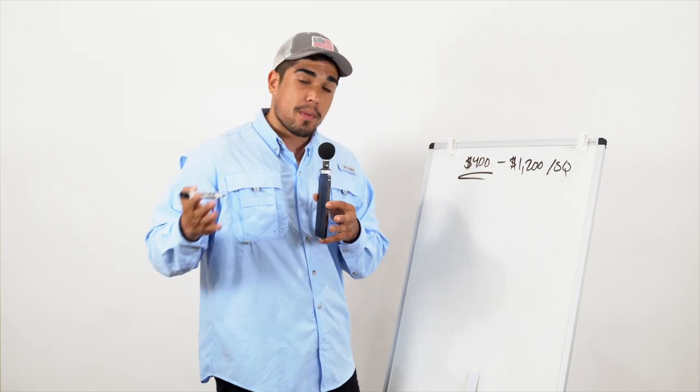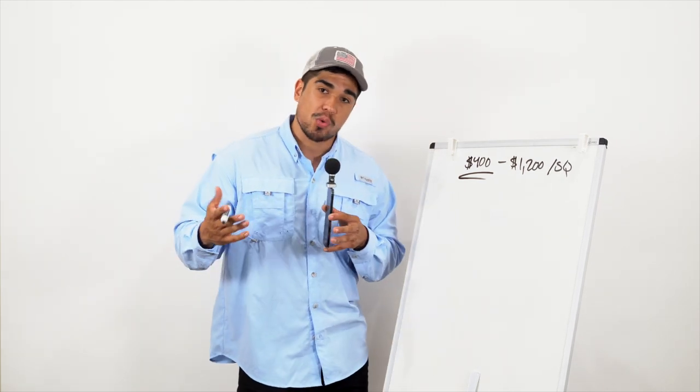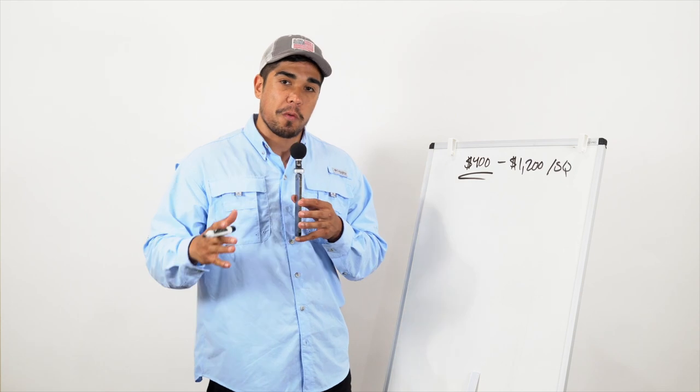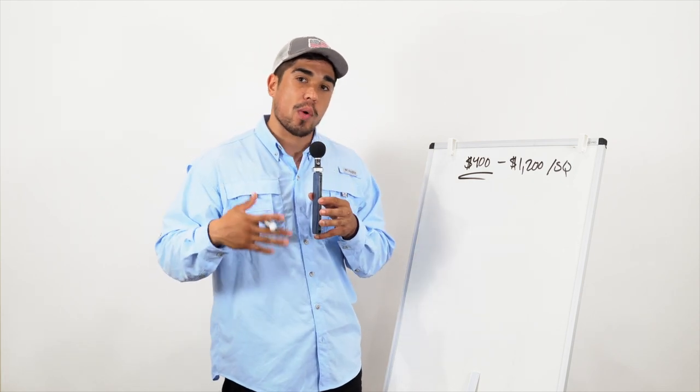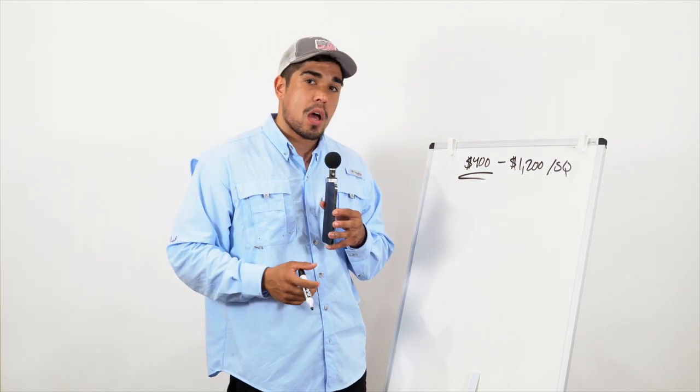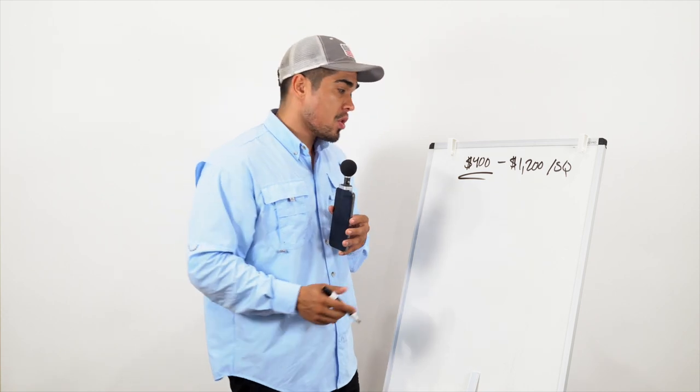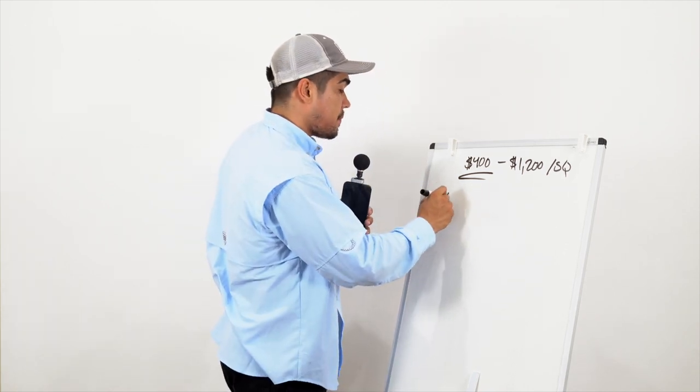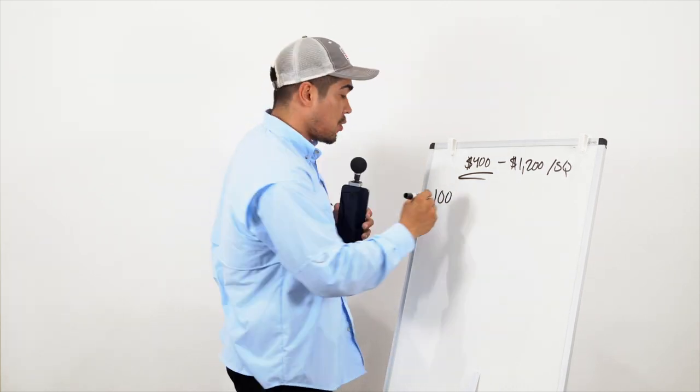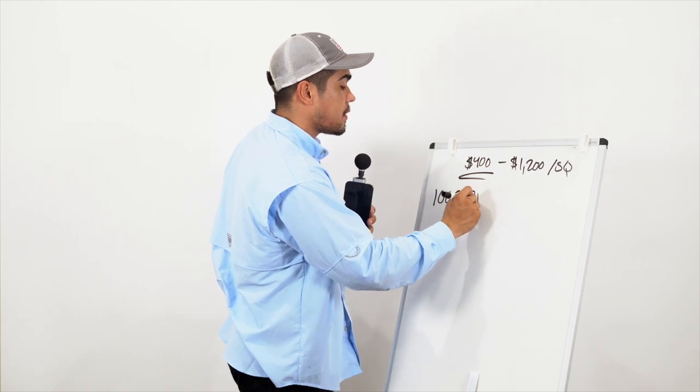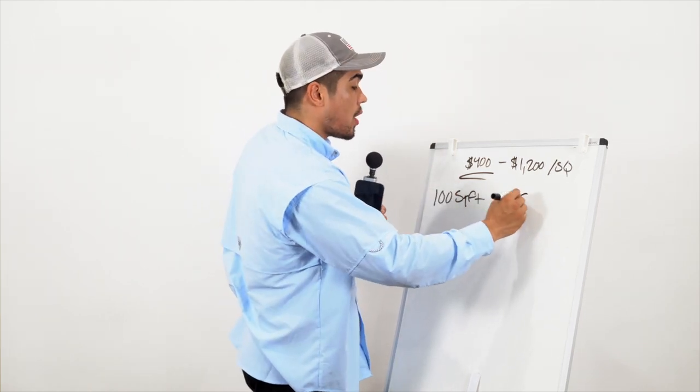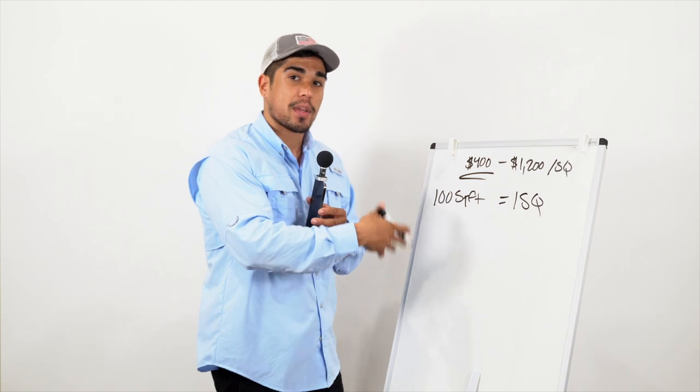When we come out to your property, we get the dimensions, the length, the width. We measure the roof, we measure the walls as well. Ten feet by ten feet equals 100 square feet, and 100 square feet equals one square, so you understand how we get our measurements.